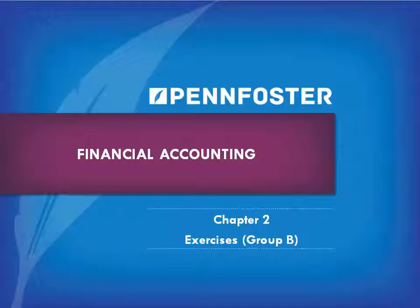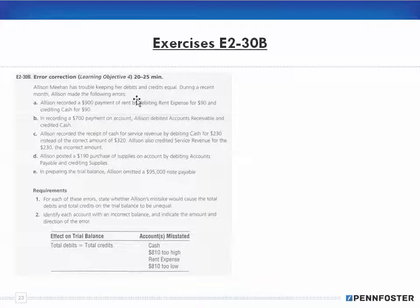Welcome back students taking financial accounting. We are working on chapter 2 exercises group B, and the only one left to do is number 30. As always, if you don't understand something, watch the videos again or watch the theory videos. If you still don't get it, feel free to telephone and speak with an instructor. This problem says Allison Meehan has trouble keeping her debits and credits equal. During a recent month, Allison made the following five errors: A, B, C, D, and E.